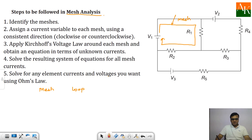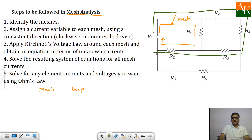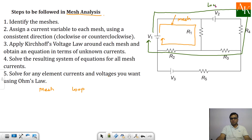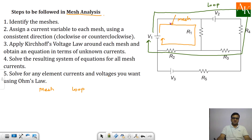But if you select a path like V1, V2, R4, R3, R2 and back to V1, this is also a closed path, but it does contain another loop within it. So this is a loop — this cannot be a mesh. So every mesh is a loop, but every loop cannot be a mesh.